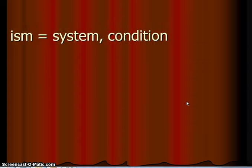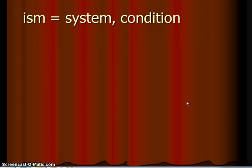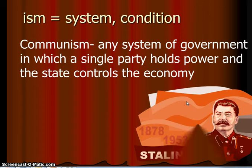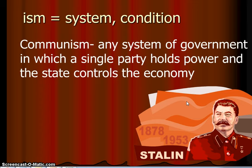Let's move on to number three: '-ism,' which means system or condition. The word that I have for '-ism' is communism, which is a system of government where a single party holds power and the state controls the economy. One of the most famous communist dictators was Joseph Stalin, and that's his picture right there at the bottom. System of government that works for them — not necessarily my choice of government, but let's not talk politics. Let's go ahead and move on to the next word and get Mr. Stalin off the screen, because you're scaring me, sir.